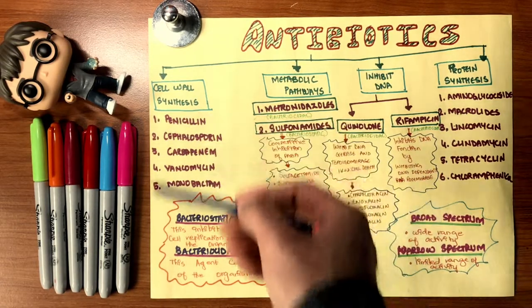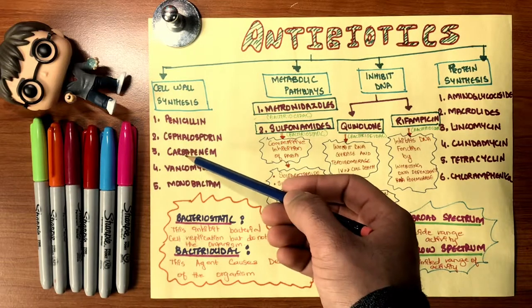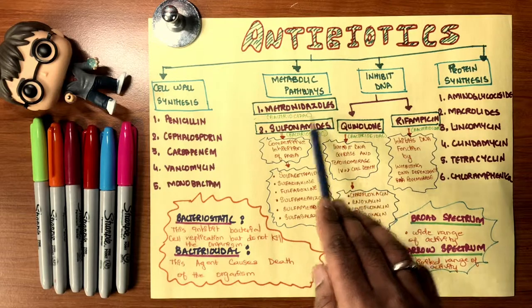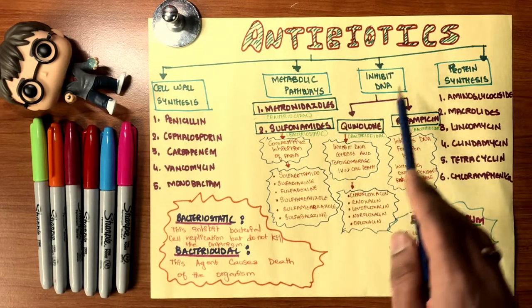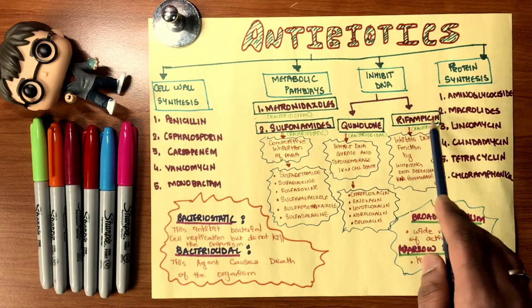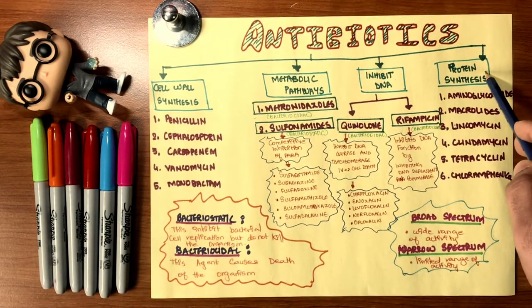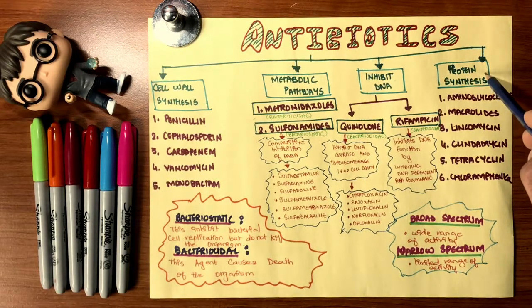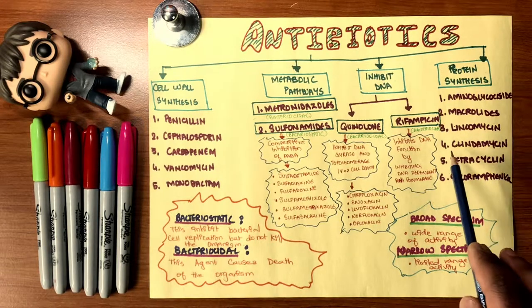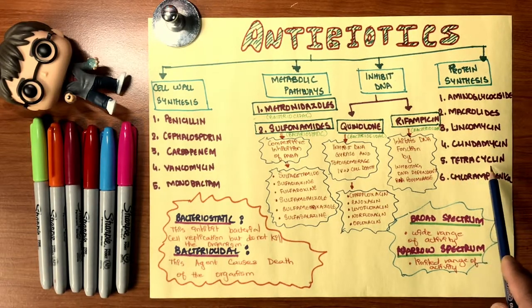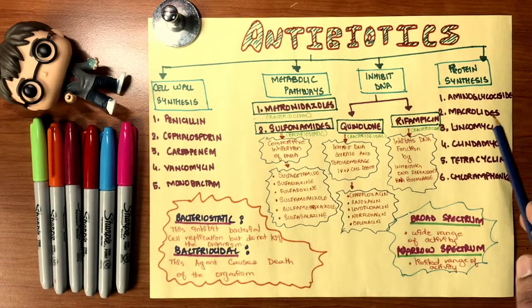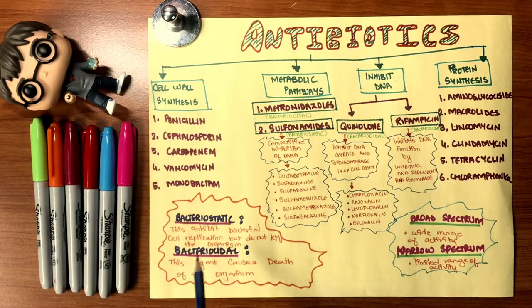Cell wall synthesis of bacteria is stopped by penicillin, cephalosporins, carbapenems, vancomycin, and monobactam. Metabolic pathways of a bacterial cell are stopped by metronidazole and sulfonamides. Inhibition of the DNA of bacteria directly is done by quinolones and rifampicin. Primarily, the protein synthesis, the food of the bacteria, is inhibited or stopped by aminoglycosides, macrolides, lincomycin, clindamycin, tetracycline, and chloramphenicol.